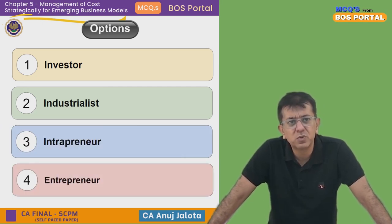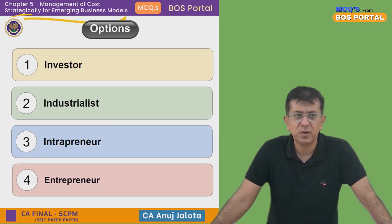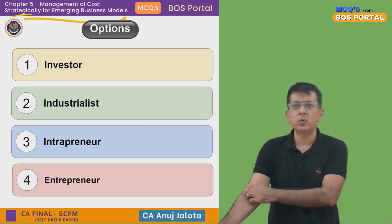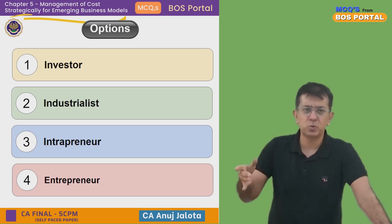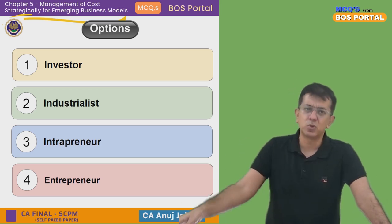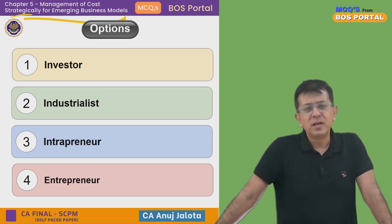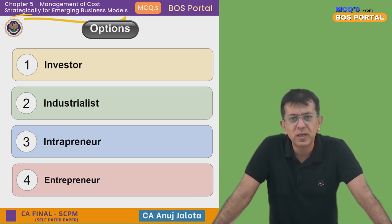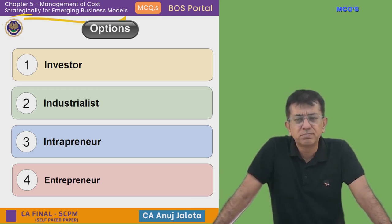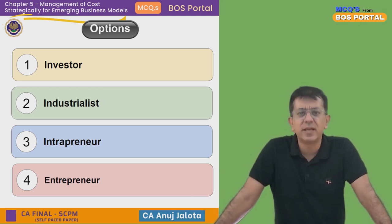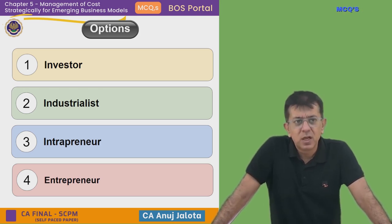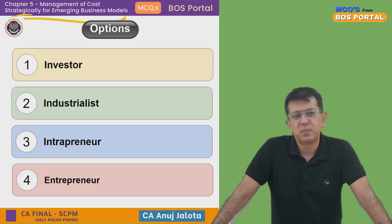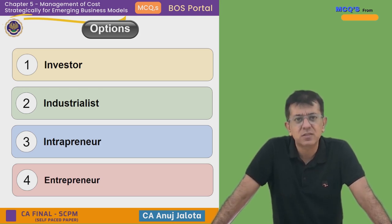The investor is the guy who only puts in money — he doesn't sell the product, and he doesn't bridge that gap. The industrialist is the guy who heads the entire company, so he's not that person either. That leaves us with intrapreneur and entrepreneur.